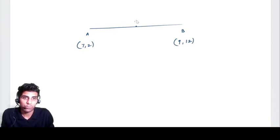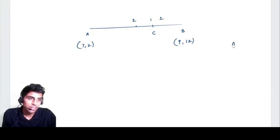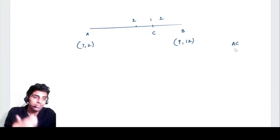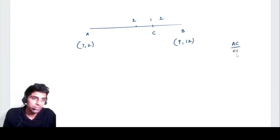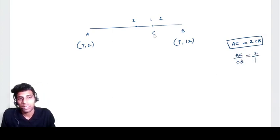C is dividing the entire line AB in 2 ratio 1. Suppose C is lying here. From here to here it is 2 and here to here it is 1. It means AC is double CB. The question can give you a thing like this also, it means AC divided by CB is 2 is to 1.